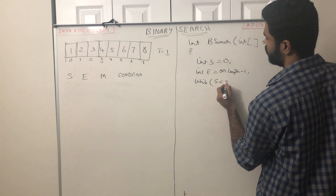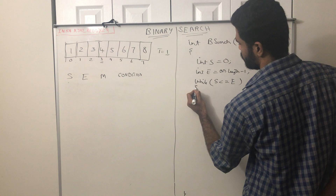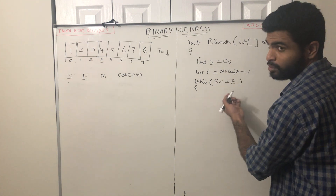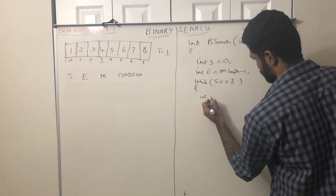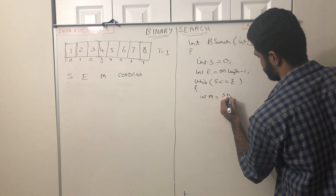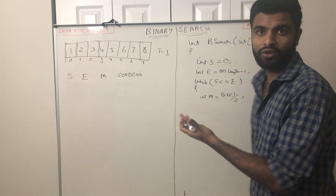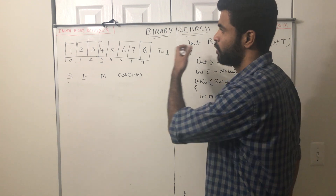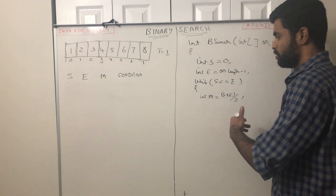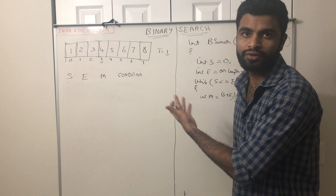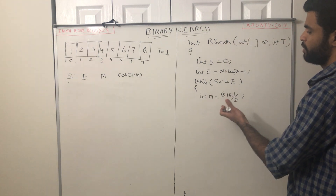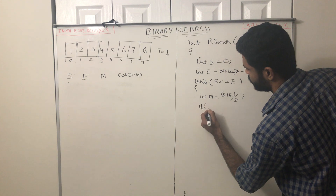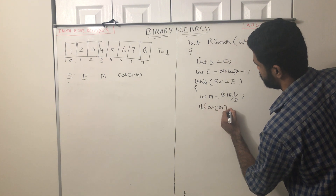The while loop condition is: while startIndex is less than or equal to endIndex. Inside the loop I want to get the middle element of the array. For getting the middle element you can use: int mid = (s + n) / 2. Please watch my previous video for a full explanation of how binary search works. Here I am just explaining another solution. Once I'm done with the solution I'll walk you through the code.